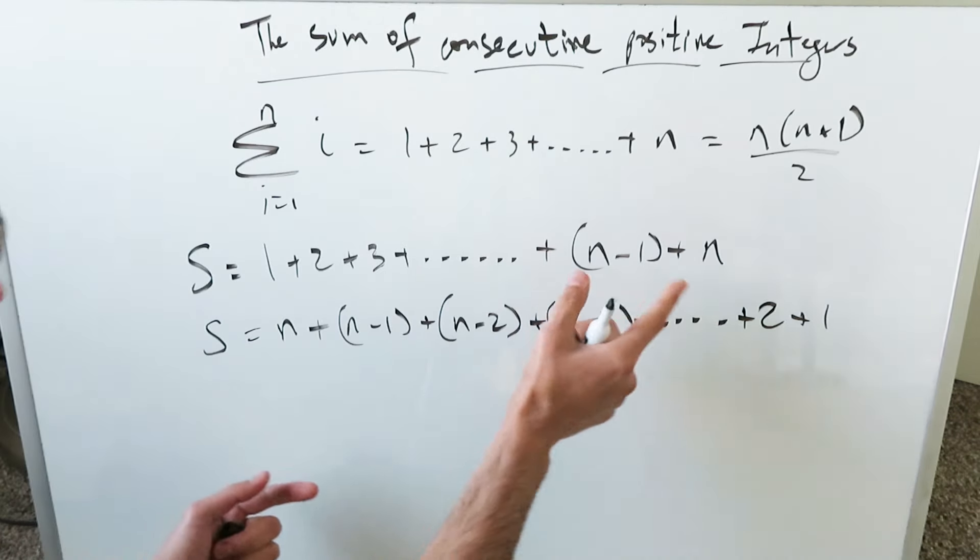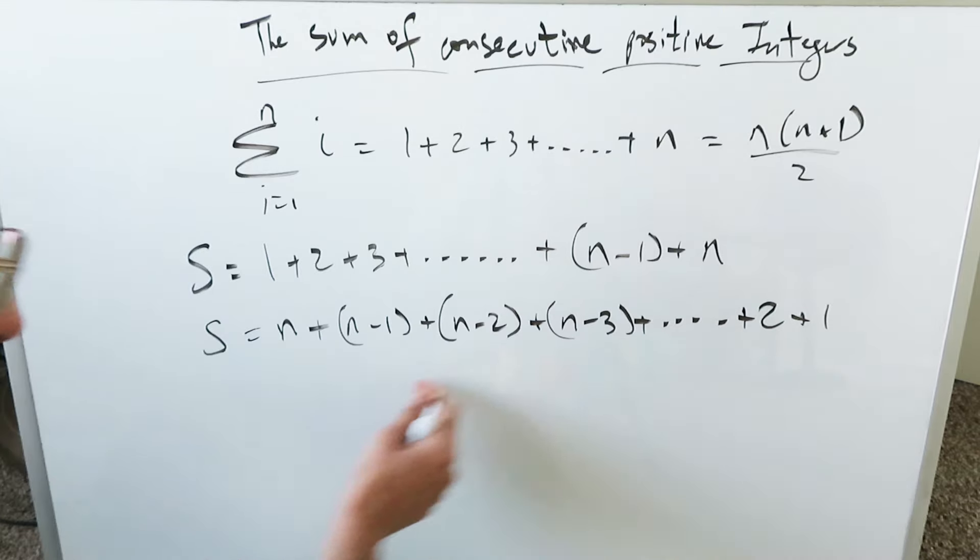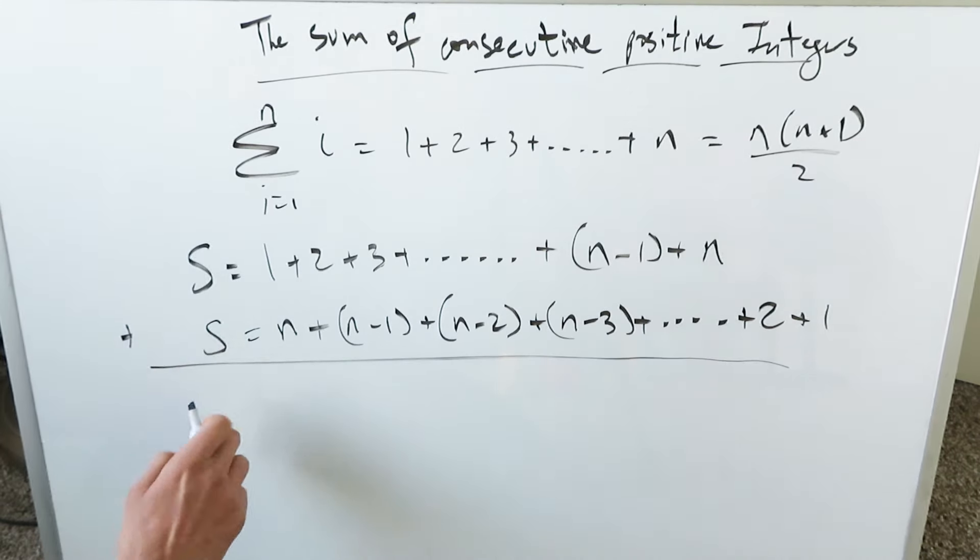This sum and this sum are represented: one in the forward direction, one in the reverse direction. You add these up. What are you getting? Here you're getting 2S.